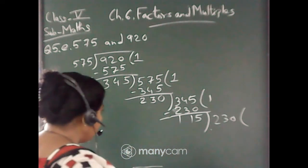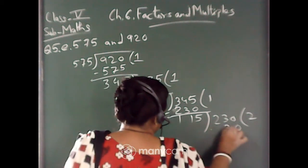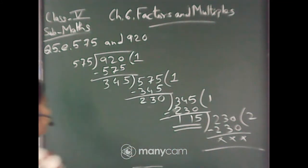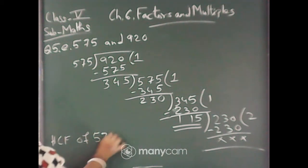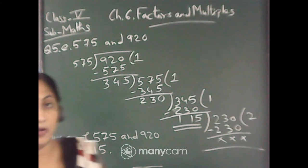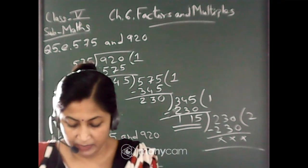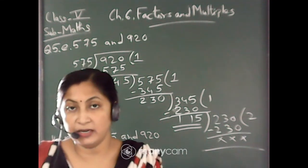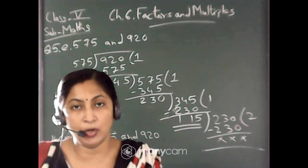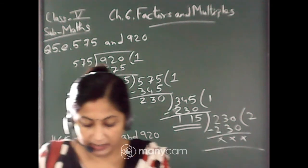Now this 345 will come down, 1 times 230. Now 230, that means this remainder will come down. 2 times 115 is 230. That means this 115 is the HCF of 575 and 920. So you will write HCF of 575 and 920 is 115. So this was for question number 5. Now we will do question number 6, find the HCF of the following numbers using division method. Here three numbers are given.